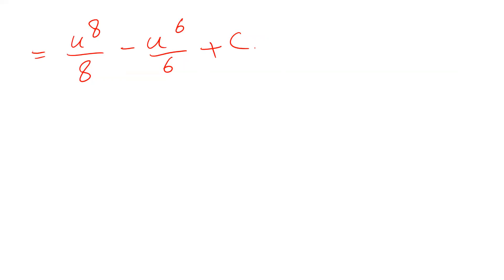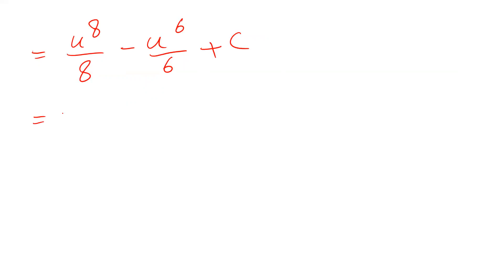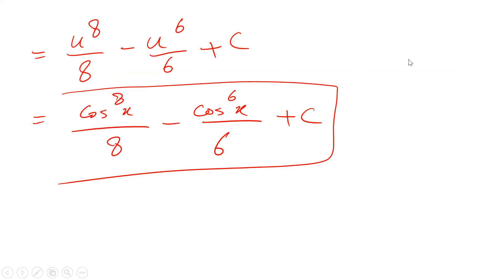So here all you need to do is to substitute this parameter u with the definition of u, which is given here. u is defined as cosine x. So here this one will be equal to cosine 8x divided by 8 minus cosine 6x divided by 6 plus c. And this is the solution to our integral. I hope you found this video helpful. Thank you.